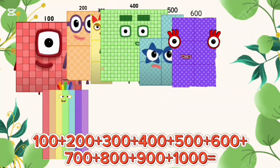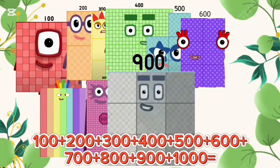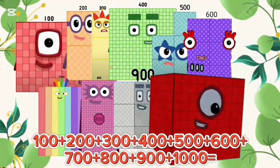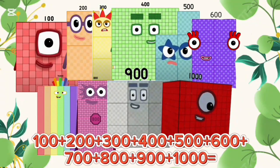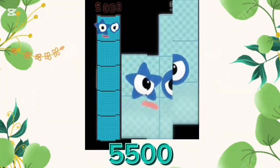700 plus 800 plus 900 plus 1,000 is equal to 5,500.